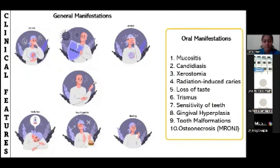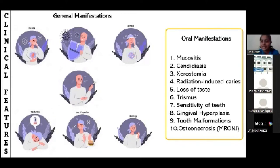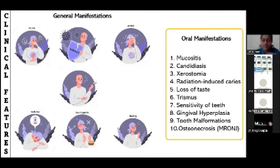Post-cancer therapy complications include general manifestations such as nausea, vomiting, hair loss, loss of appetite, excessive weakness, and excessive bleeding leading to anemia. When it comes to oral manifestations where we can contribute: mucositis, candidiasis, xerostomia, radiation fibrosis, loss of taste, trismus, gingival hypoplasia due to cyclosporins administered as immunosuppressants, and last but not least, osteonecrosis. These are the complications occurring in the oral cavity, and I will share how to manage these patients.